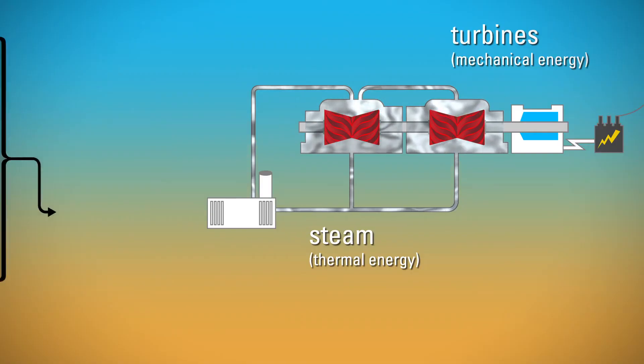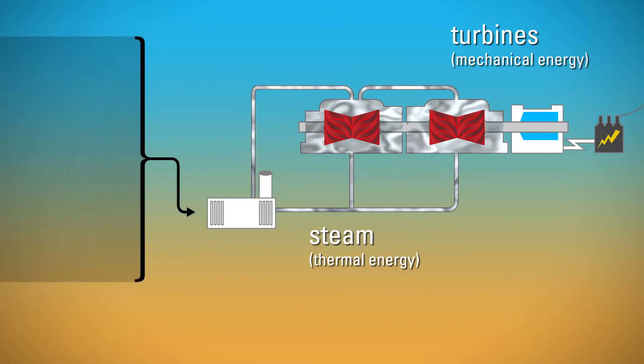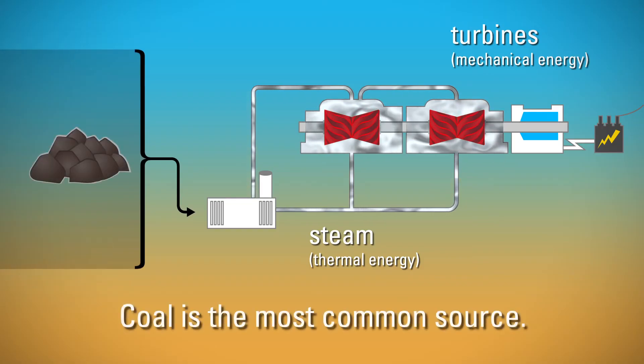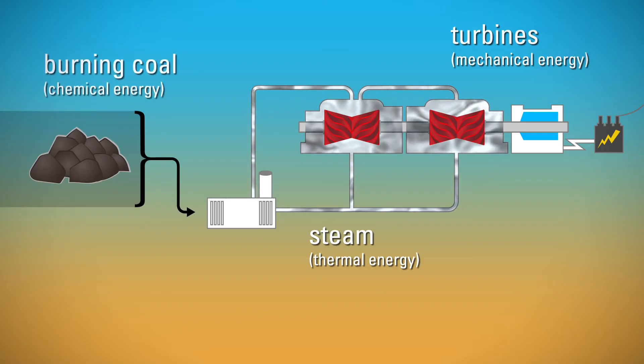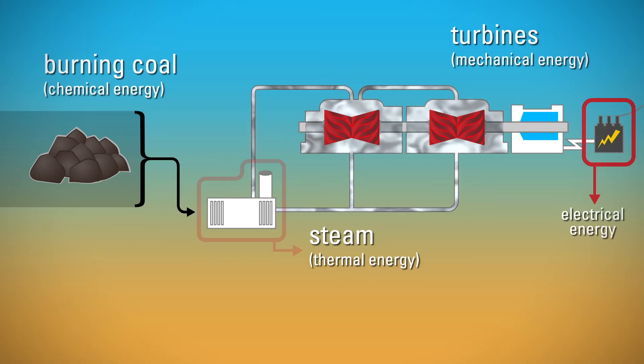But where does the steam come from? Burning separate energy sources, such as natural gas, biomass or coal, heats up the water to create the steam. So what starts as chemical energy in burning coal becomes thermal energy in steam that then becomes electric energy.